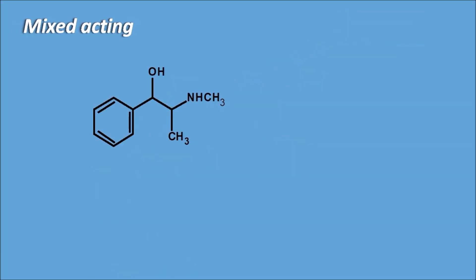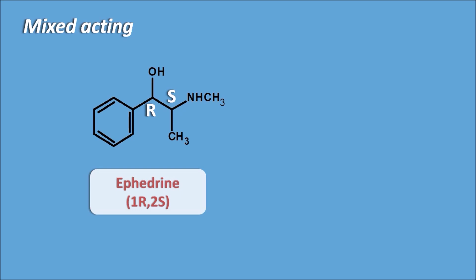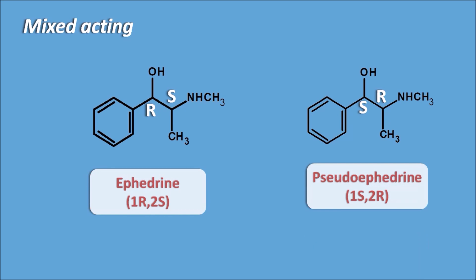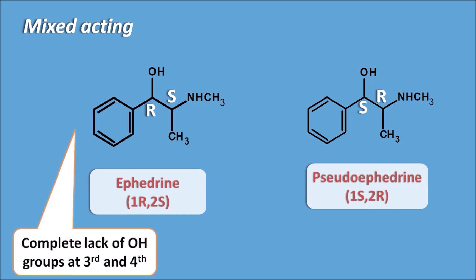Ephedrine is a mixed-acting agent with an OH group at the beta position and a CH3 group at the alpha position, with 1R,2S configuration. Pseudoephedrine is an isomer of ephedrine with the opposite 1S,2R configuration. Like amphetamine, these drugs have no OH groups at the third and fourth positions, but they retain the beta-hydroxyl group, enabling both direct and indirect action on adrenergic receptors.